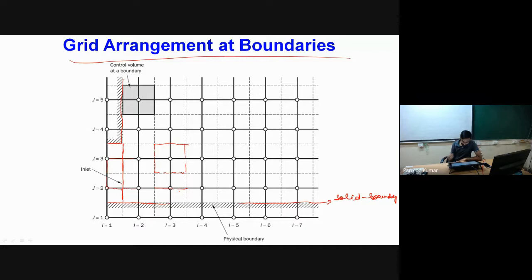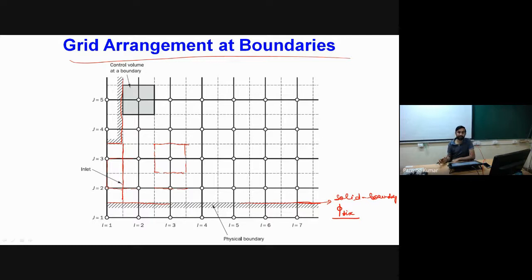Say I have some parameter phi, and at any boundary I want to specify the value as phi_fix. When we have solid boundaries present, we have to treat the boundary nodes differently. There is a way to treat boundary nodes in the usual fashion as we do for internal nodes, using source terms — which we will now explain.